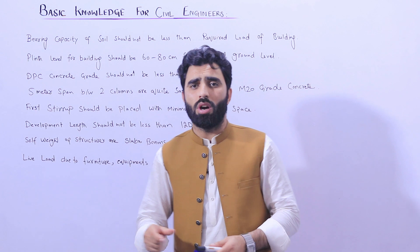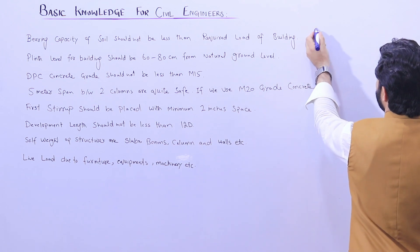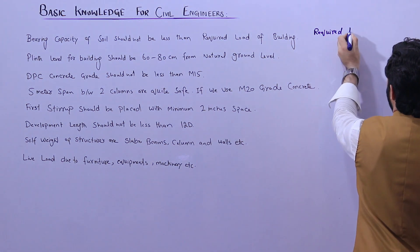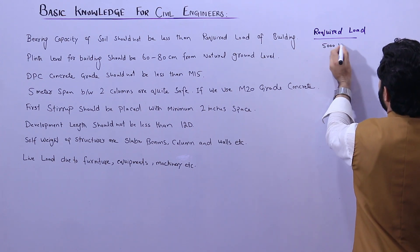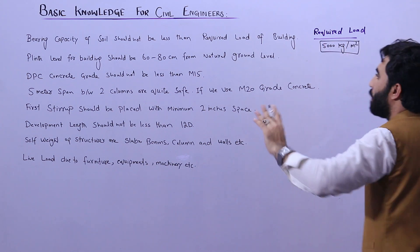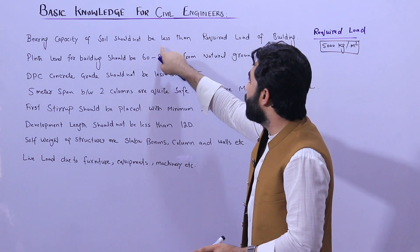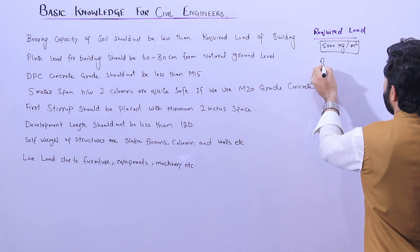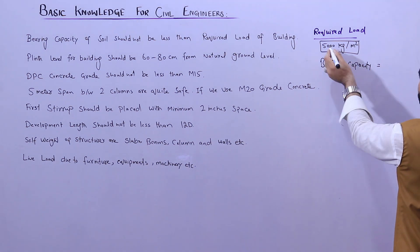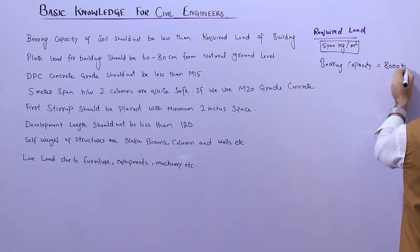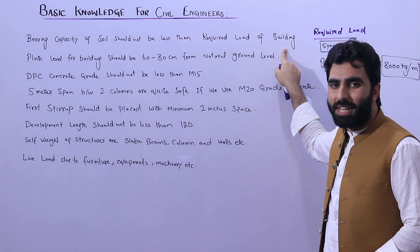The bearing capacity should be equal to or greater than the required load of the building. For example, if the required load of the building is 5000 kg per meter square, then the bearing capacity of the site should not be less than this. It should be more — for example, 8000 kg per meter square. So the bearing capacity should be maximum, not less than the required load.